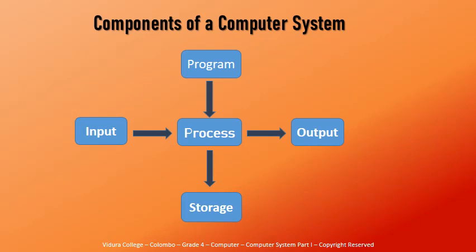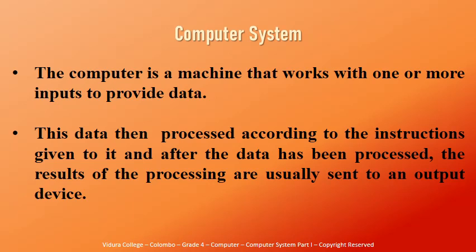Remember, the process is carried out in the central processing unit — in short, we call this the CPU. The computer is a machine that works with one or more inputs to provide data. This data is then processed according to the instructions given to it, and after processing, the results are usually sent to an output device. Sometimes the processed data is stored in storage devices.